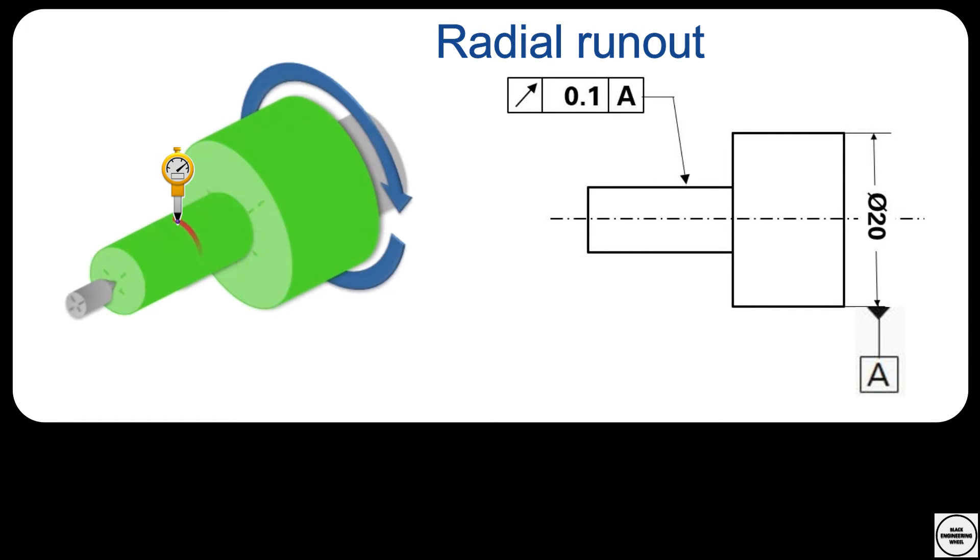Then I start rotating the part around the axis of the bigger section and I measure the height again. This way the dial gauge measures the difference in height between the different points of the surface while it's rotating with reference to axis A. As long as the difference in height is smaller than the value of the tolerance, then the part passes the inspection.